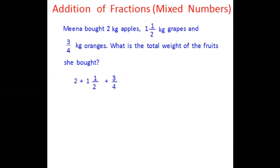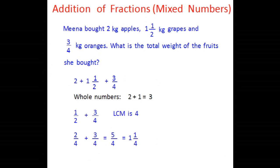First, we add all the whole numbers, which is 2 and 1 in this case, giving 3. Now we take the fraction parts: 1 half and 3 over 4. The LCM of the denominators is 4, so the equivalent fractions are 2 over 4 and 3 over 4. Adding these gives 5 over 4. Since 5 over 4 is an improper fraction, we convert it back to a mixed number. Dividing 5 by 4 gives quotient 1 and remainder 1, so it becomes 1 and 1 over 4.